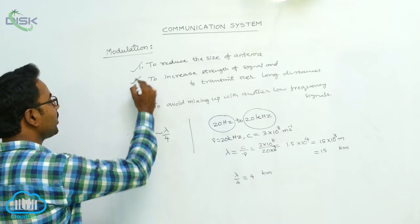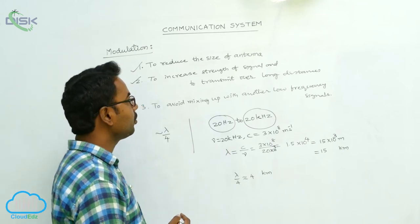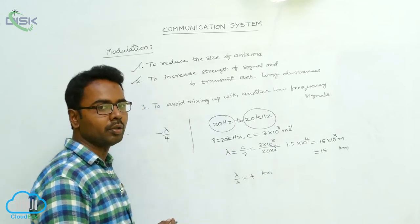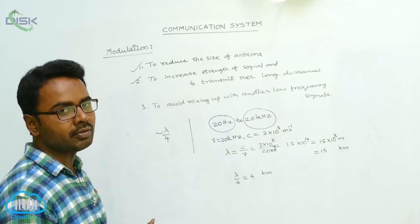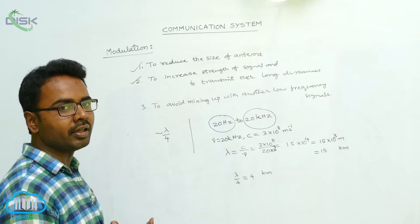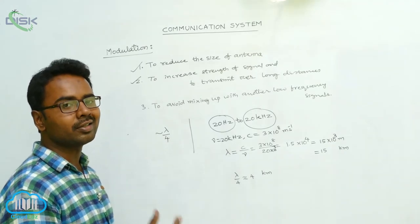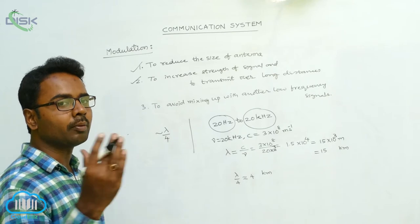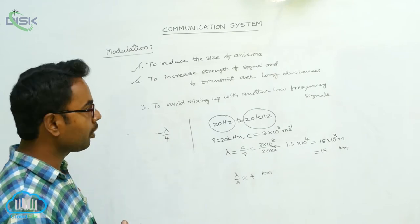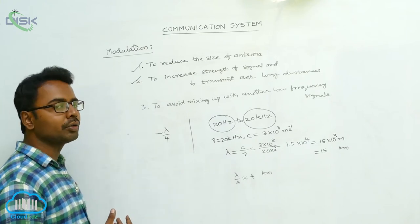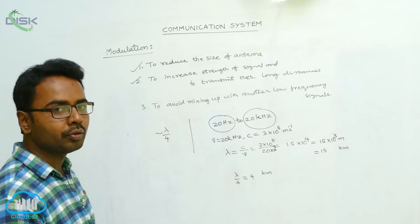To increase the strength of the signal and to transmit over long distances, we should do modulation. By doing modulation, the frequency of the signals will be increased. When frequency increases, the strength of the signals also increases and energy is increased. If the strength is increased, automatically they can propagate over long distances. That is the reason why, to propagate over long distances, we should increase the strength of the signal by doing modulation.